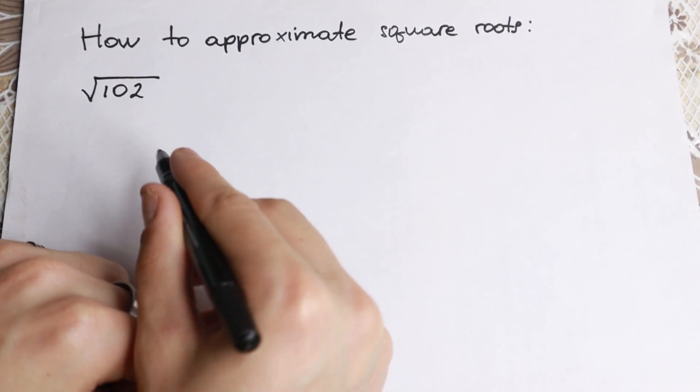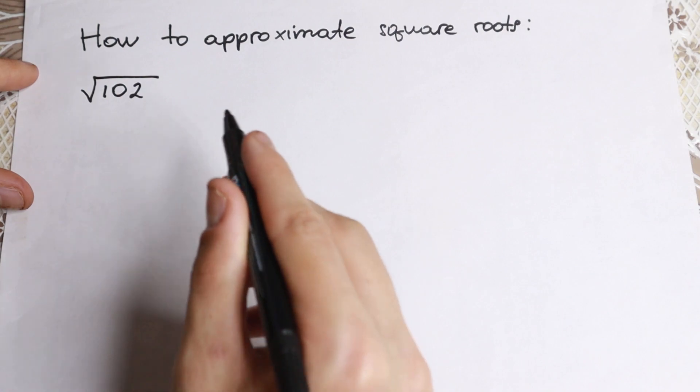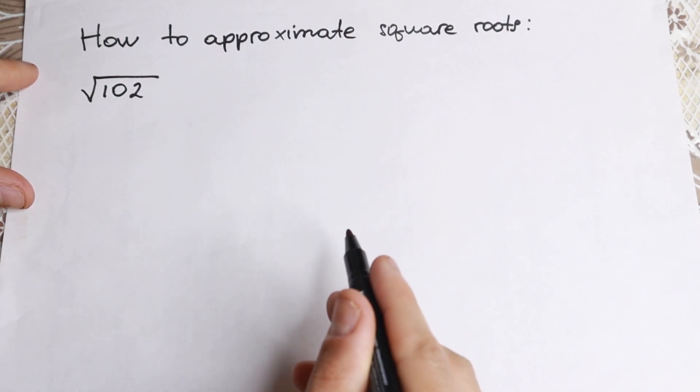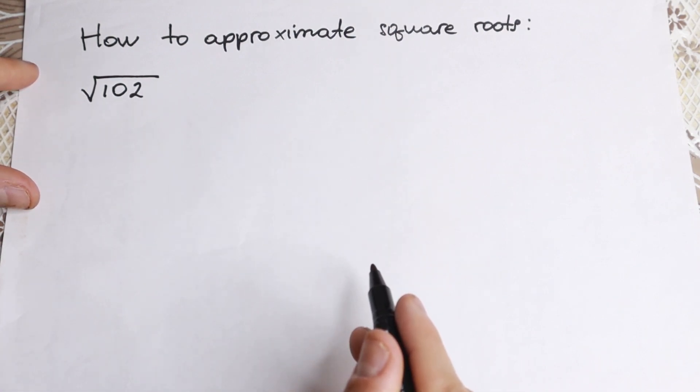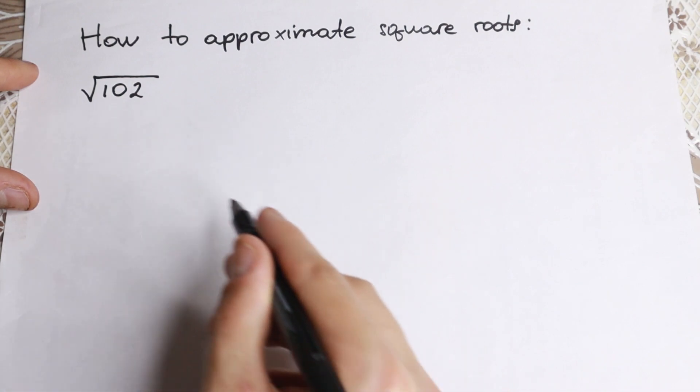So for example we need to approximate the square root of 102. Why is this really good for us? Because we don't know exactly the value of this square root of 102. What is the closest value that we know?